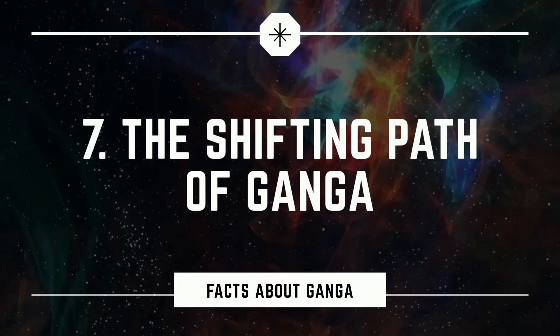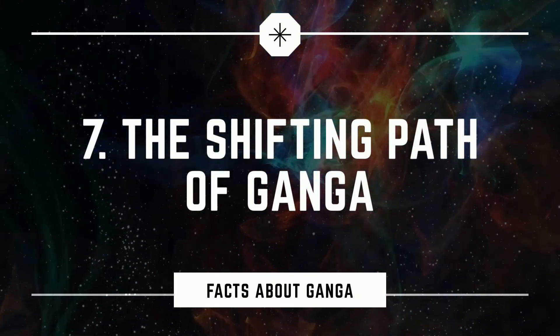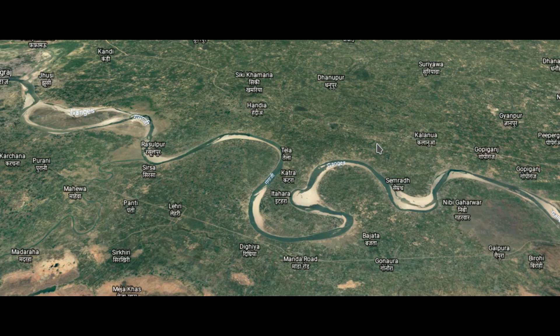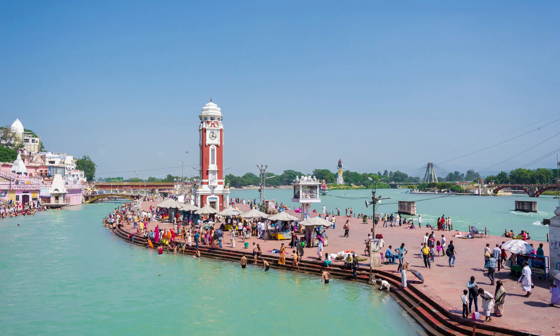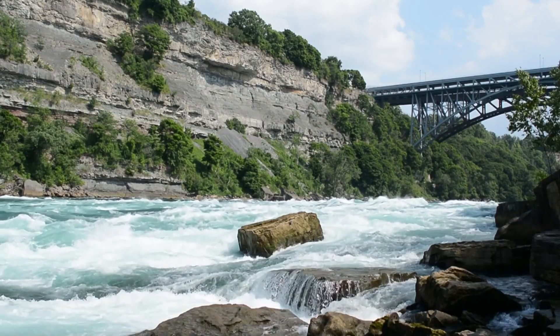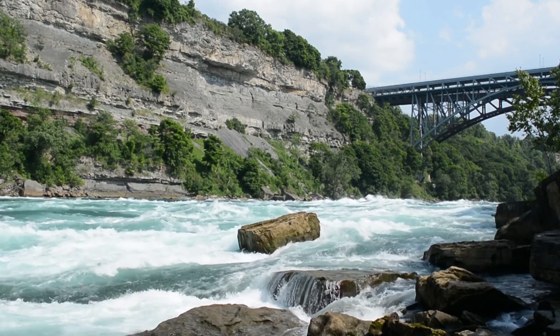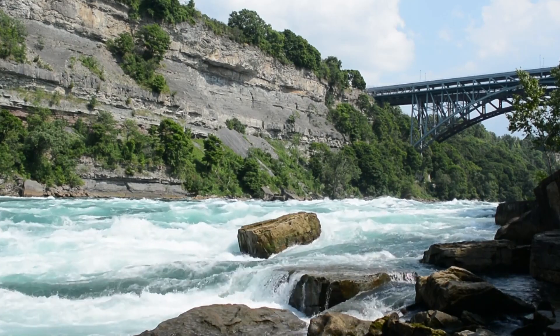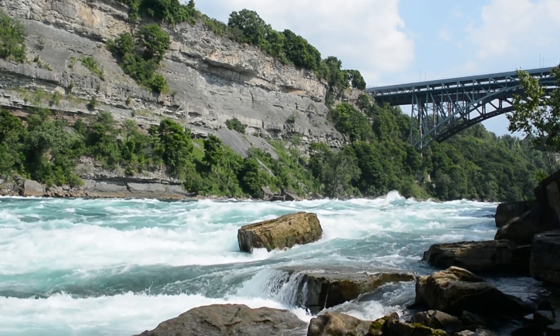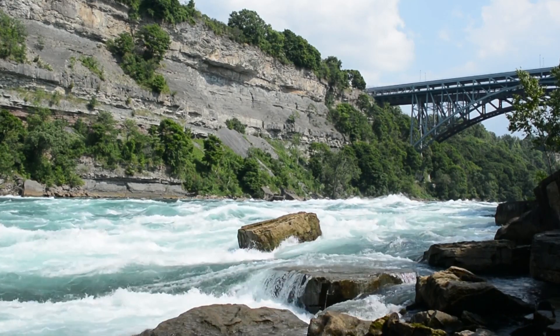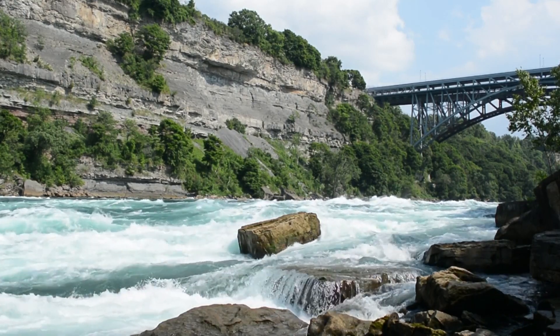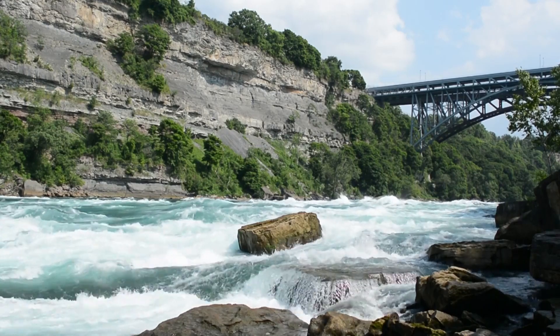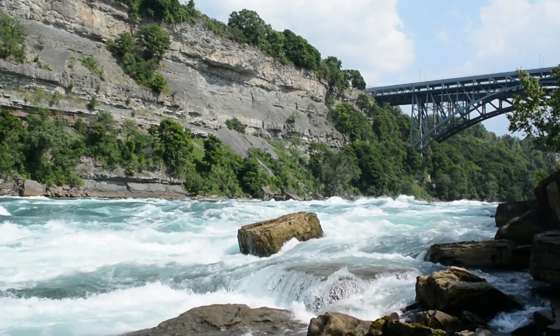Shifting of a river is nothing new, but the Ganga in Haridwar was shifted from its original course by 500 meters in the past few decades. Most of it is natural, but population growth and deforestation are also to be blamed. The shift has become more pronounced in the last three decades.